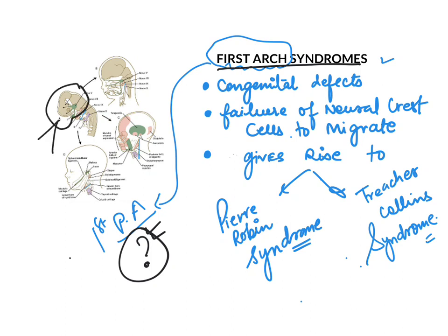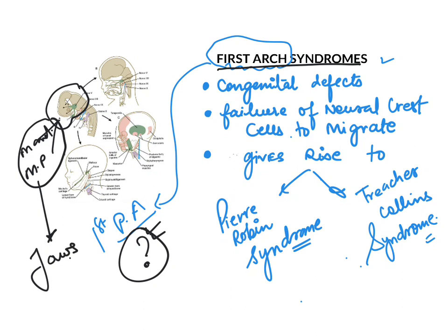The first pharyngeal arch is majorly responsible for giving rise to the mandible region as well as a major part of the maxillary process. In short, the first pharyngeal arch gives rise to the jaws. So if anything goes wrong — if any defect occurs in the first pharyngeal arch — the jaws will majorly not form correctly.